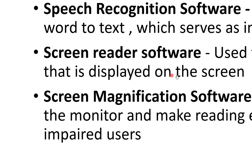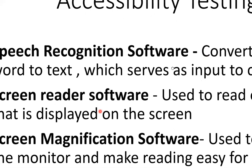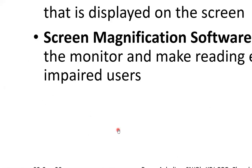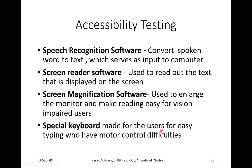For example, you can zoom in like this on the screen — this is used for visually impaired users. That is what your screen magnification software is. There are also special keyboards made for users who have motor control difficulties. These keyboards try to recognize keys and allow special-needs users to type. These are some types of applications that every system has for accessibility testing.